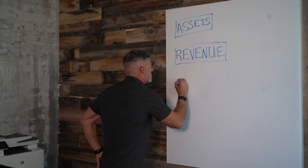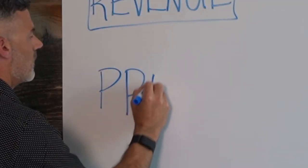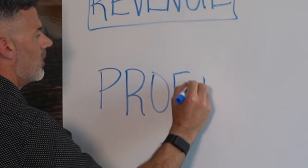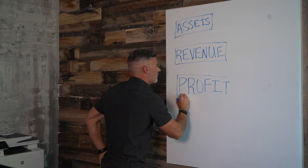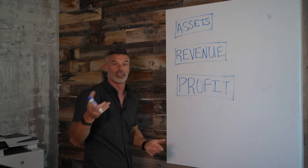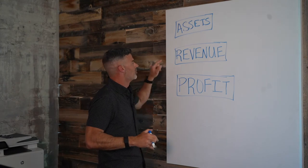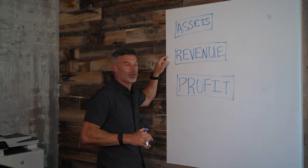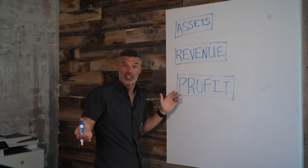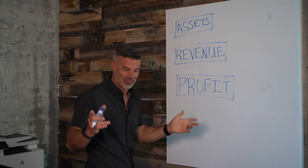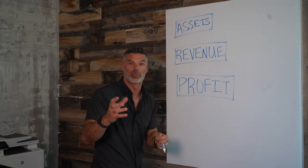Then the third piece is profit. And if you're watching to this point thinking that's all basic stuff, wait till you see how it's ultimately connected. Profit is how much you get to keep out of the revenue that you make — this is where you actually make money. But profit is just a theory because it's a number on an income statement. You can't spend your profit.